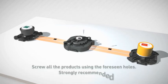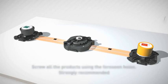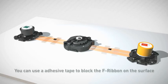Screw all the products using the foreseen holes. Strongly recommended. If you wish, you can use a hard adhesive tape to block the F-ribbon on the surface.